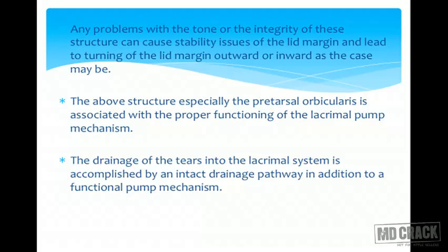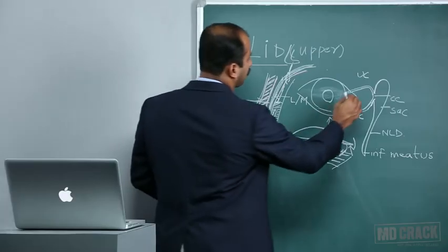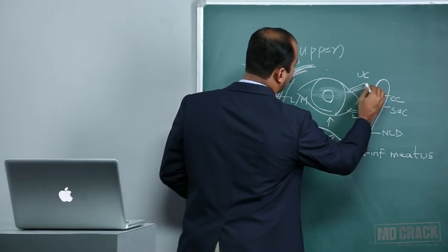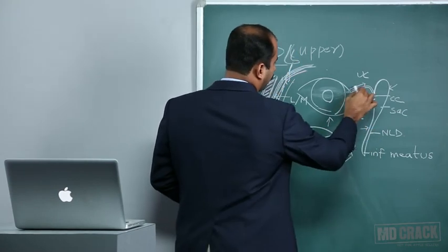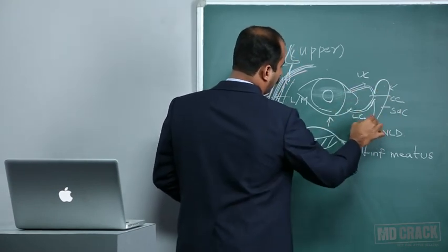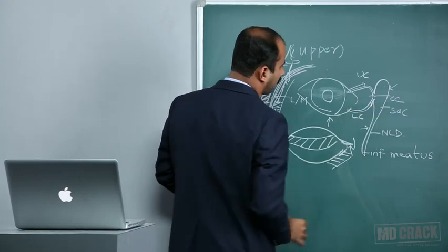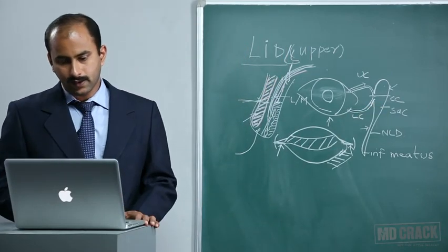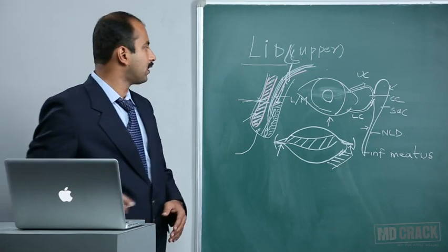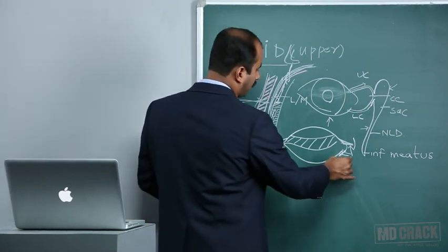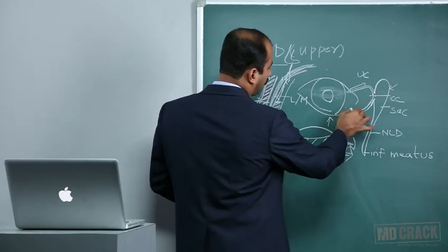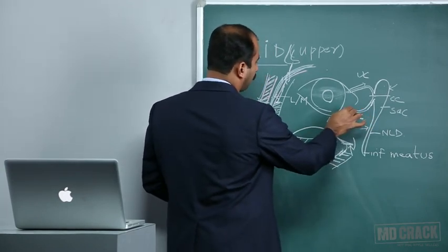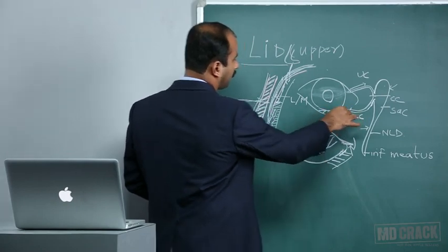Drainage of tears into the lacrimal system is accomplished by an intact drainage pathway consisting of the canaliculae, the common canaliculae, the lacrimal sac, and the NLD. Any physical or anatomical obstruction to any of these passages can lead to a nasolacrimal block and tearing. If there is a problem with the pretarsal orbicularis, there is a deficiency in the lacrimal pump and tears will not enter the canaliculae, resulting in a watering eye with a high tear meniscus.